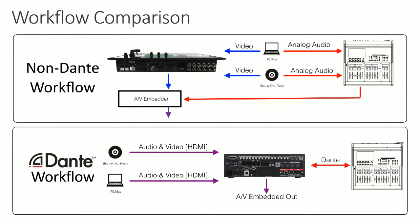Here's a workflow comparison. In a non-Dante workflow, you might have a PC, Mac, or Blu-ray player where you split video to the video mixer and audio to the audio console, mix it, send it back to an AV embedder, and then back to the video mixer for web stream or broadcast. In the Dante workflow, you can take the Blu-ray audio and video, go into the V1200, de-embed the audio, and send it to your live audio console to mix for the room or event broadcast — pretty powerful workflows.